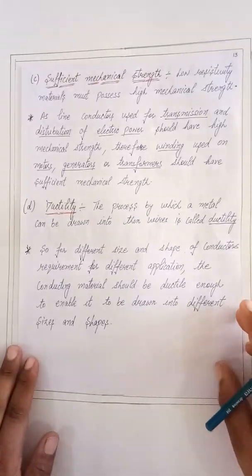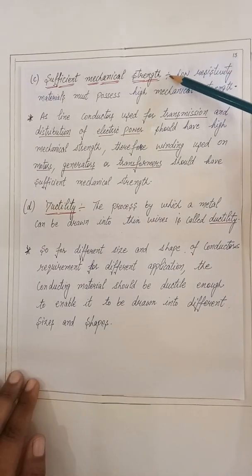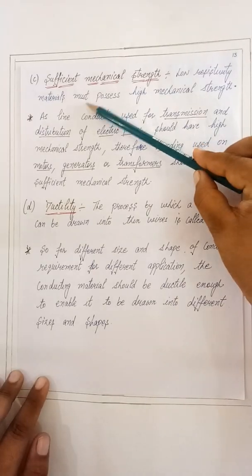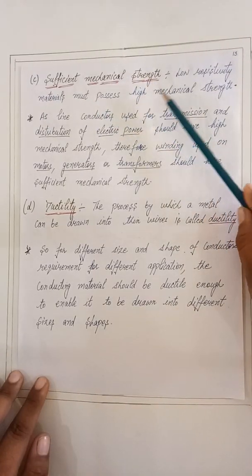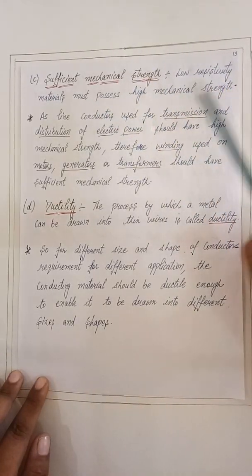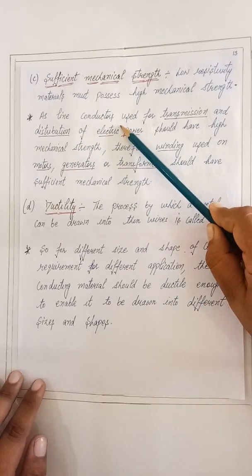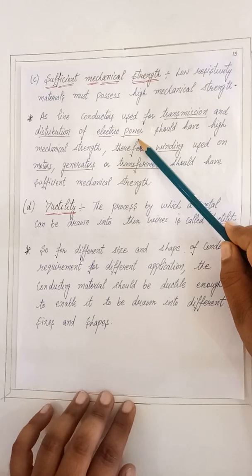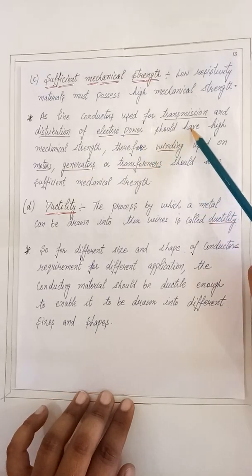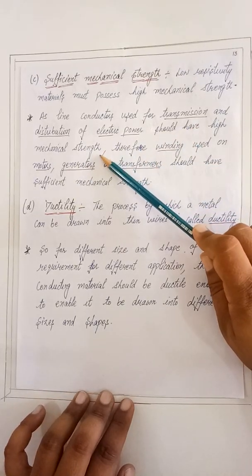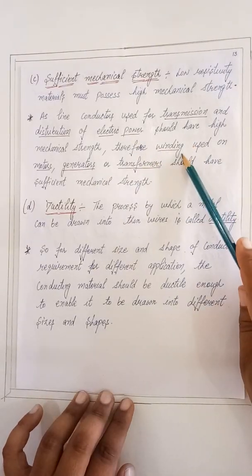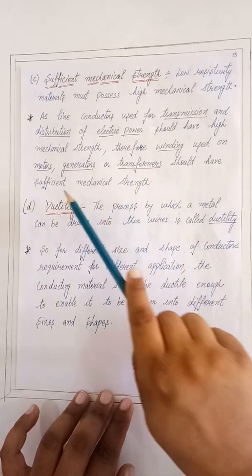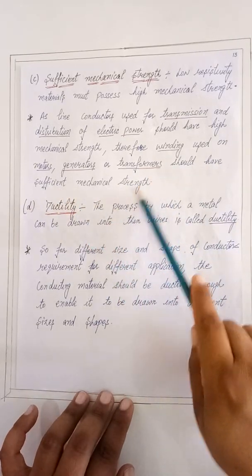The third property is sufficient mechanical strength. Low resistivity materials must have high mechanical strength, as line conductors used for transmission and distribution of electric power should have high mechanical strength. Therefore, windings used on motors, generators, and transformers should also have sufficient mechanical strength.